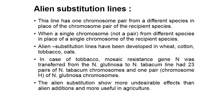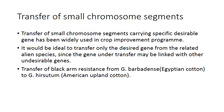Transfer of small chromosome segments carrying specific desirable genes has been widely used in crop improvement programs. It would be ideal to transfer only the desirable genes from related alien species, since the gene under transfer may be linked with other undesirable genes. Example: transfer of black arm resistance from Gossypium barbadense to Gossypium hirsutum.